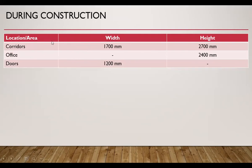During construction, the corridor should have a width of 1700 millimeters and a height of 2700 millimeters. The door should be 1200 millimeters wide and the office should be 2400 millimeters in height.